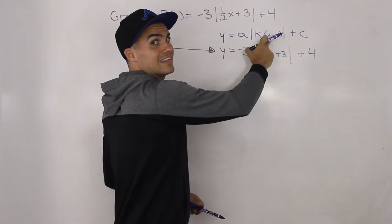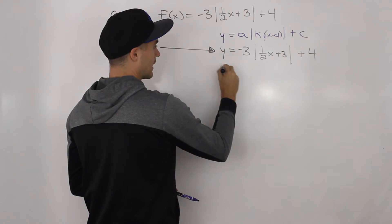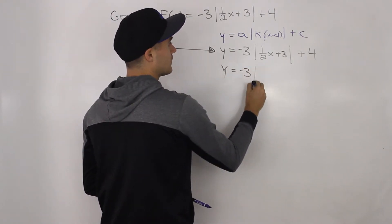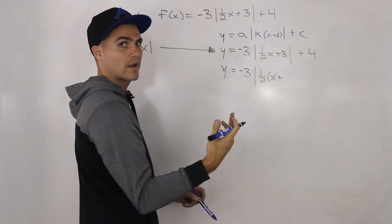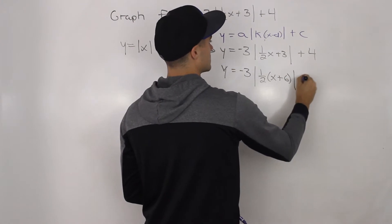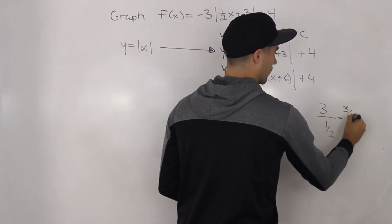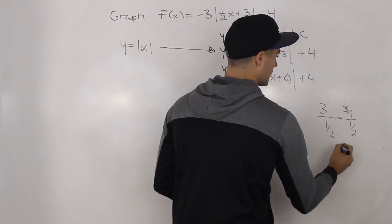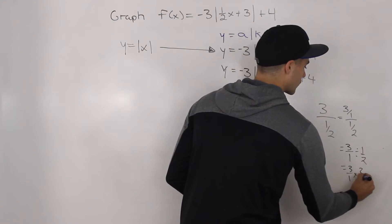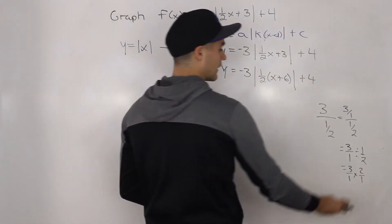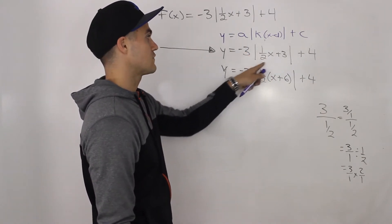So we have to manipulate things algebraically inside the absolute value. We factor out the one half: negative three times absolute value of one half times (x plus six), plus four. Because three divided by one half equals three over one times two over one, which gives us six. So just be careful with that algebra — three divided by one half equals six, not three.